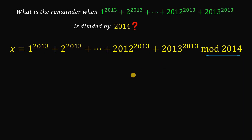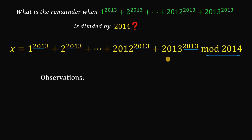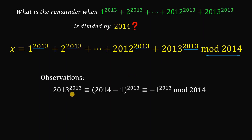We will use some properties of modular arithmetic. One observation in this question is the exponent — the exponent is 2013, and 2013 is an odd number. Aside from the exponent, here is another key observation: 2013 raised to the 2013 can be rewritten as (2014 minus 1) raised to the 2013.